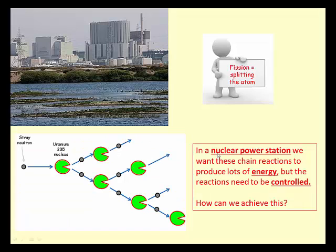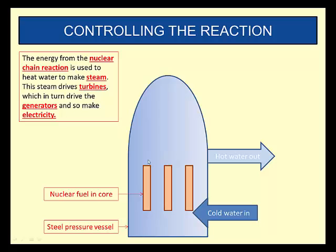This chain reaction releases huge amounts of energy. In a nuclear power station we want these chain reactions to produce loads of energy, but we need to control it — we can't just let it go at its own pace, out of control. So we need to control it. So how can we achieve this?